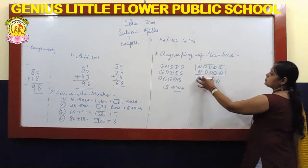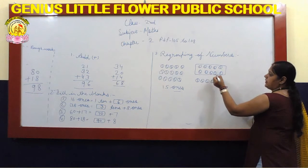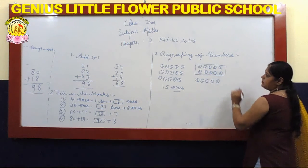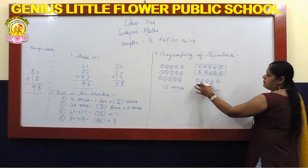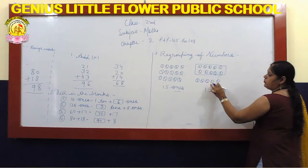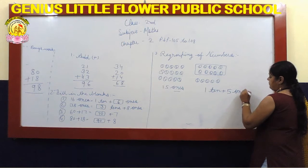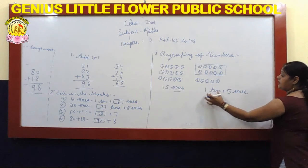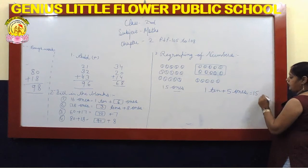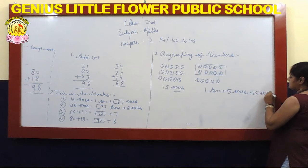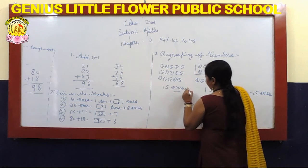Dekhiye, is group mein kitni balls hain? 1 through 10 — 10 balls hain. It means 1 ten. Plus 1, 2, 3, 4, 5 — 5 balls hain, 5 ones. So 1 ten plus 5 ones. 15 ones is equal to 15. 1 ten plus 5 ones is equal to 15.